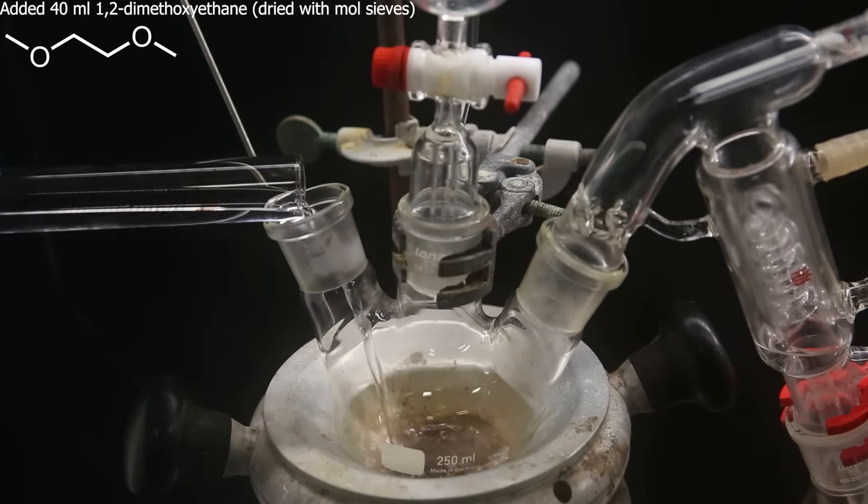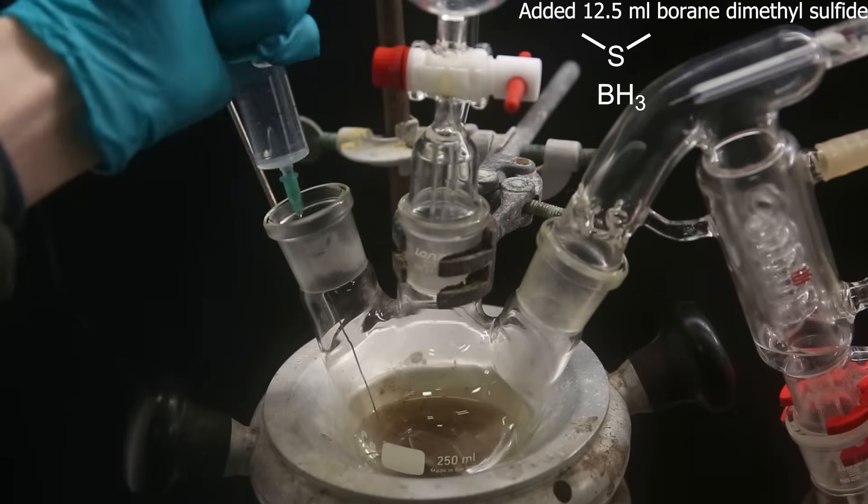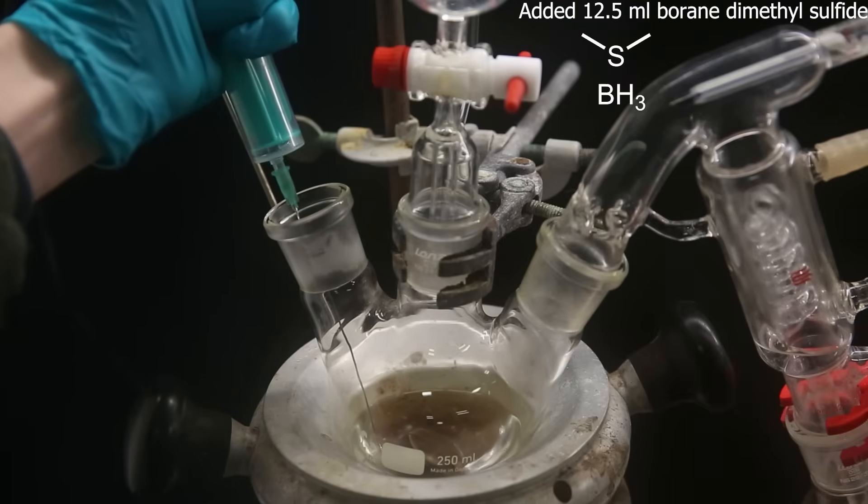On top of that, I add 40 ml of dry 1,2-dimethoxyethane. Then with a syringe, I add 12.5 ml of borane dimethylsulfite below the liquid surface.